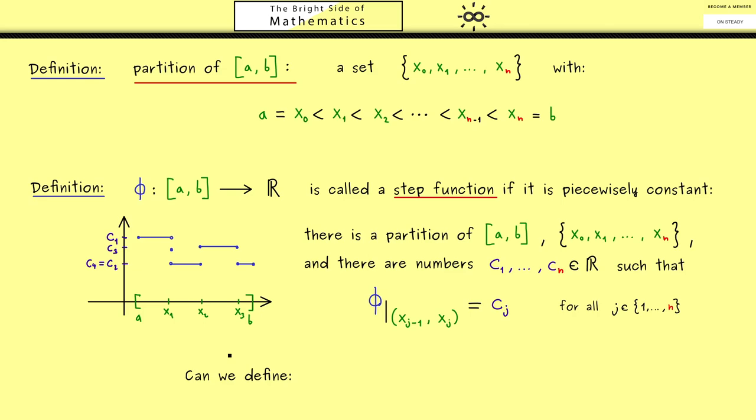Therefore, my question for you would be: can we immediately define the integral for such a step function? Please recall this is the symbol that is a number that represents the orientated area. This means in this case we just have to add all the areas of the rectangles here. So we have a sum that starts with 1 and goes to n. Also, we know the height is given by c_j and the width is given by the difference of these two points here. So what we see here is, in this case, the integral is given by this finite sum.